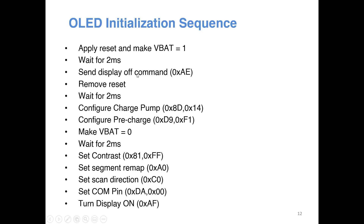Only after this initialization sequence is executed can you start displaying characters or pictures using the OLED. First make the VBat signal high, then wait two milliseconds, then send command 0xAE to turn the display off, apply a reset signal to the OLED, wait two milliseconds, configure the internal charge pump, configure the pre-charge value, make VBat high again, wait two milliseconds, set the contrast, set the scan direction, set the COM pin configuration, and finally turn the display on.